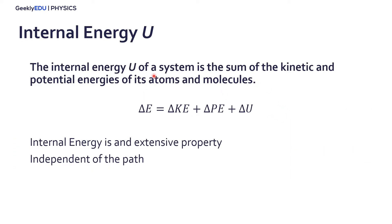Let's talk about also the internal energy. Well the internal energy of a system is the sum of the kinetic and potential energies of its atoms and molecules. So if you remember energy we have kinetic energy, potential energy, but we also have an internal energy and this internal energy is related to the movements of atoms and molecules inside a system. What we need to know is that internal energy is an extensive property. So it depends on the mass of the system and also that it's independent of the path from the system.